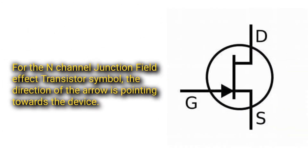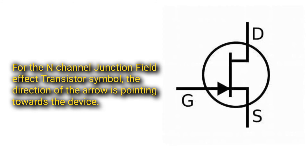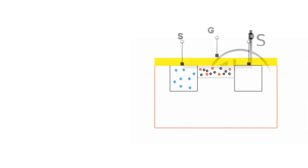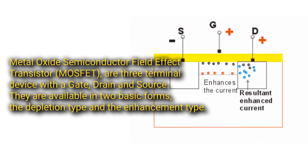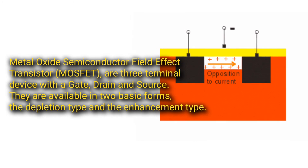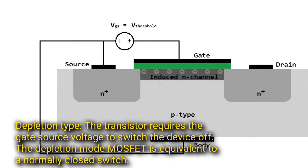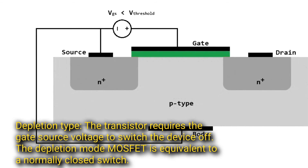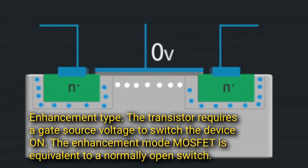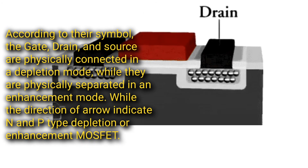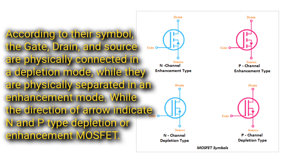For the N-channel JFET, the direction of the arrow in its circuit symbol points towards the device, while for the P-channel JFET the arrow points outward. MOSFET: a three-terminal device with a gate, drain, and source, available in two basic forms — depletion type and enhancement type. The depletion-type transistor requires a gate-source voltage to switch the device off and is equivalent to a normally closed switch. The enhancement-type requires a gate-source voltage to switch the device on and is equivalent to a normally open switch.